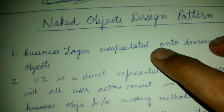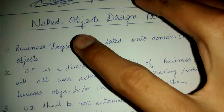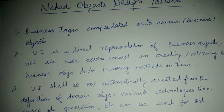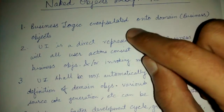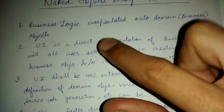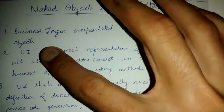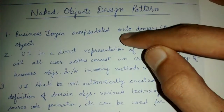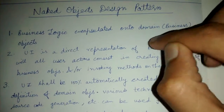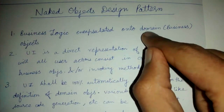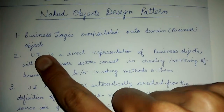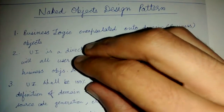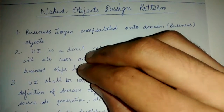Hello friends, today we'll be looking at the Naked Objects design pattern. This design pattern is defined by three principles. The first is that all the business logic is encapsulated within business objects, which are also known as domain objects — specific classes within which all your business logic resides.